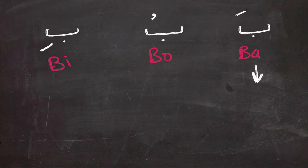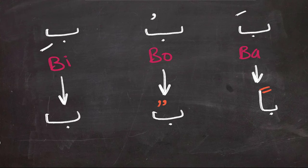For example, the letter Ba with a short vowel will be Ba, Bu, Bi. But if we double this short vowel, it will be Ban, Bun, and Bin.